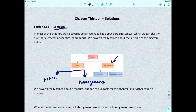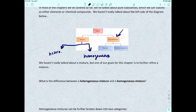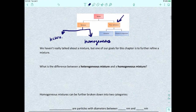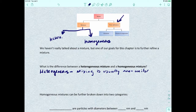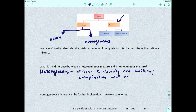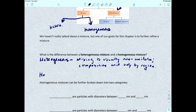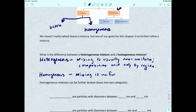We haven't talked about mixtures a whole lot in chemistry, but one of our goals for this chapter is to further refine what a mixture is. What is the difference between a heterogeneous mixture and a homogeneous mixture? A heterogeneous mixture means that mixing is usually non-uniform and the composition varies by region. For homogeneous mixtures, the mixing is uniform and the composition is constant throughout the mixture.